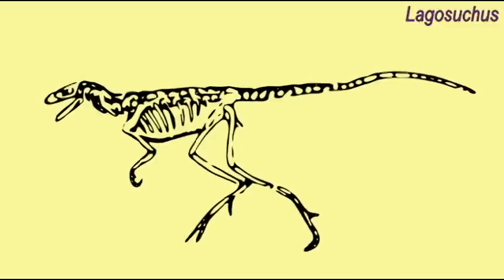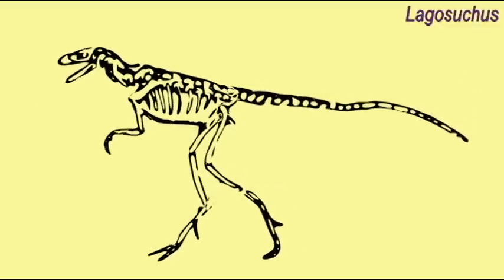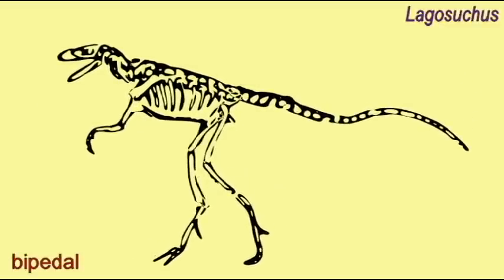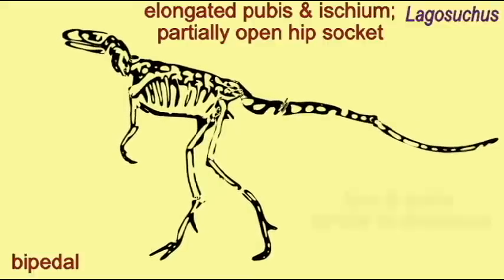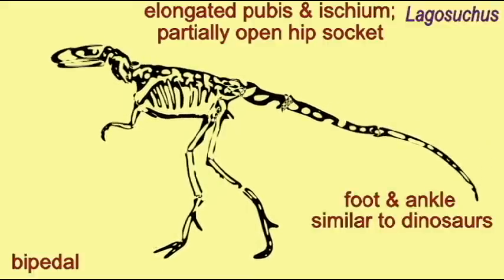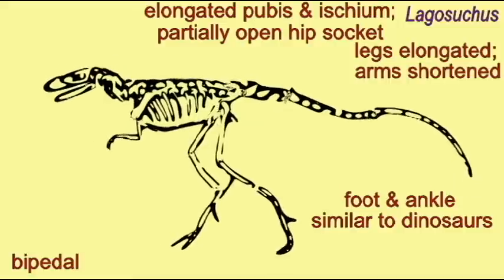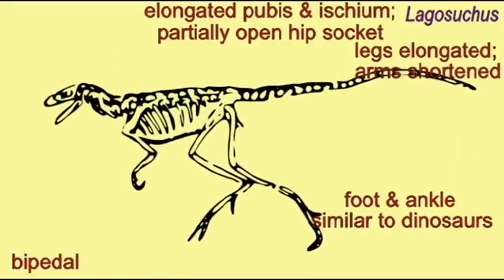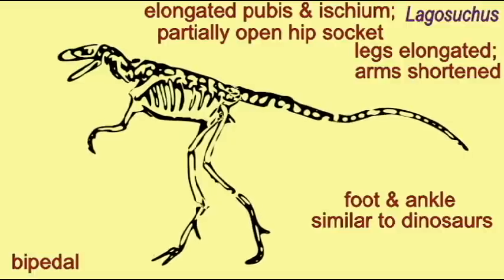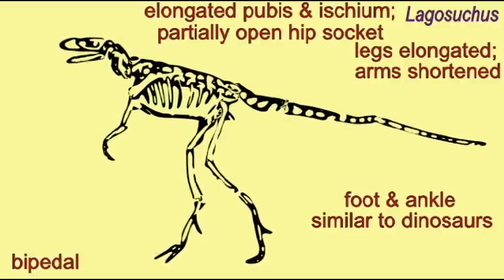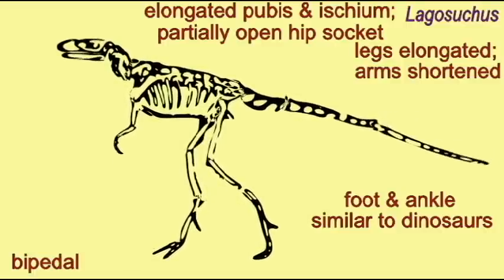These transitional forms are seen in the archosaurs of the Triassic known as thecodonts, and by the end it is difficult to distinguish between many of these thecodonts and the first dinosaurs. We do see a series of transitional forms throughout the early and mid-Triassic appearing to evolve into the dinosaur group.